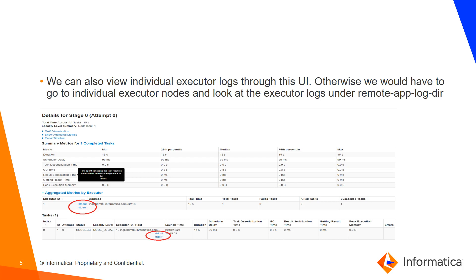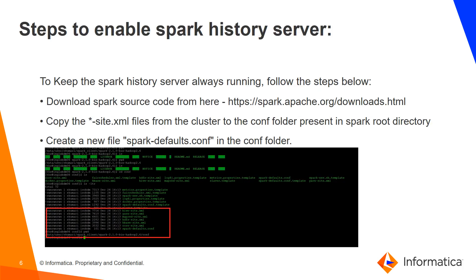With respect to logs, we can easily fetch individual executor logs from the Spark History Server UI. Otherwise, we would have to get the complete application log using the yarn command, or go to the HDFS location to get each of the executor logs. So fetching from the Spark History Server UI becomes very easy. That was all about what is Spark History Server and its benefits.